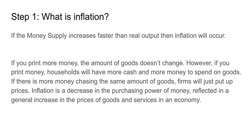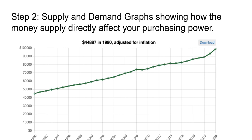Step two: supply and demand graph showing how the money supply directly affects your purchasing power. Here we have a graph illustrating what $44,887 in 1990 adjusted for inflation in 2022 is worth, which is approximately $100,000. This greatly emphasizes how inflation has basically made things harder for the standard of living in America.